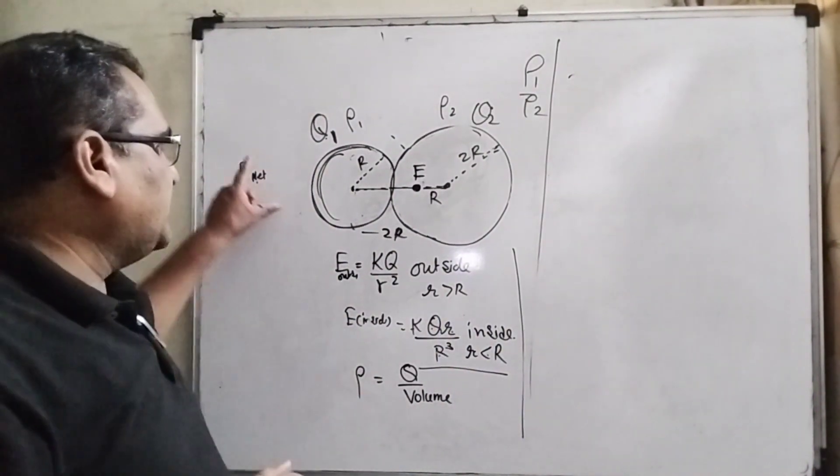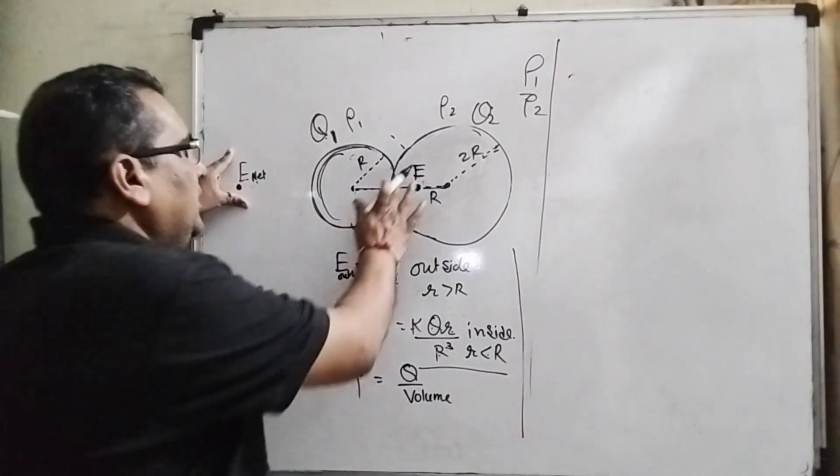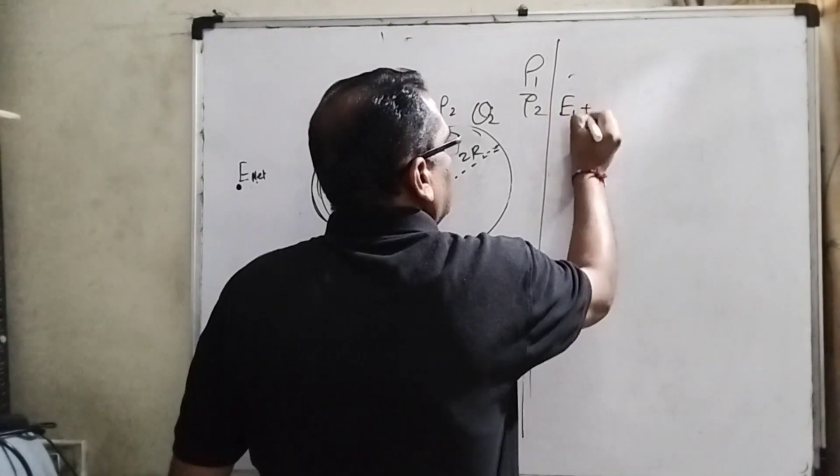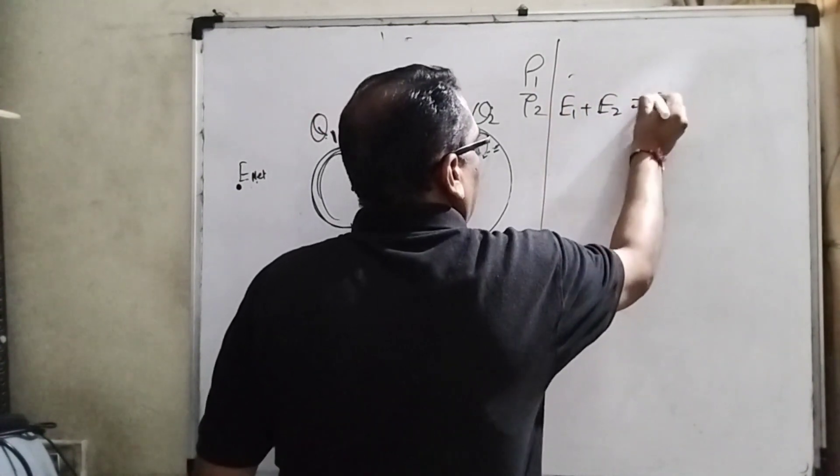In the case of second condition, net electric field is outside of both the spheres. So here E1 plus E2 equal to 0.